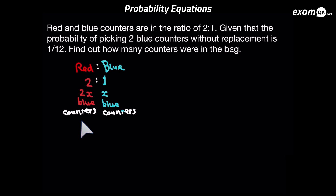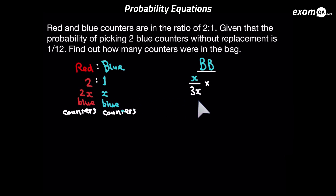Now when we're doing our probability equation and talking about picking a blue counter, we can say what the probability of picking a blue counter is. So let's work out the probability of picking two blue counters. There's x blue counters over the total amount of counters, which is 2x plus x, which is 3x. So picking a blue counter is x over 3x.